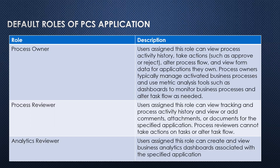The second role is process reviewer. Users assigned this role can view tracking and process activity history, and they can view or add comments, attachments, or documents for the specified application. Process reviewers cannot take actions on tasks or alter task flow. The third role is analytics reviewer — users assigned to this role can create and view business analytics dashboards associated with the specified applications.